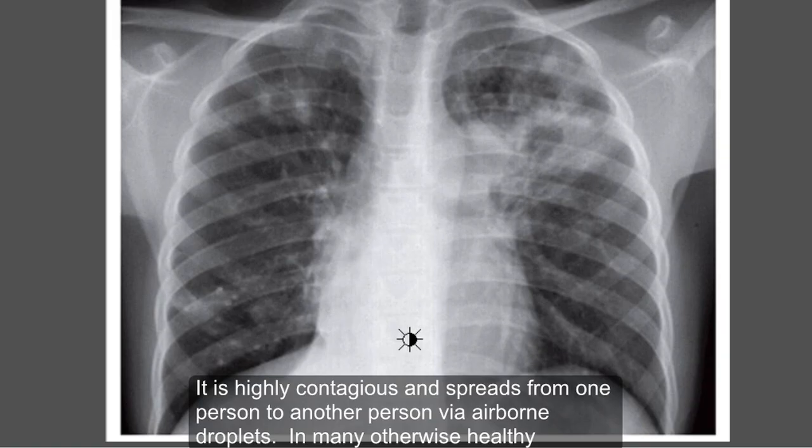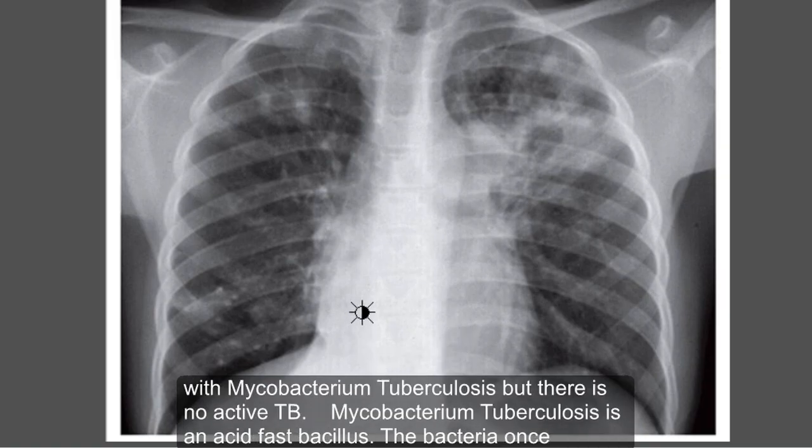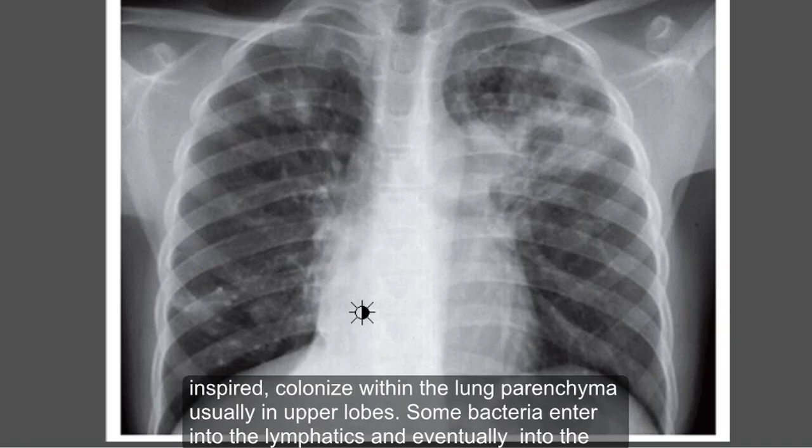TB is caused by Mycobacterium tuberculosis. It is highly contagious and spreads from person to person via airborne droplets. In many otherwise healthy individuals, the bug is usually kept under control by the immune system and latent TB develops — meaning a person is infected with Mycobacterium tuberculosis but there is no active TB.